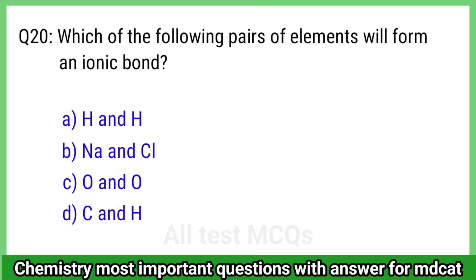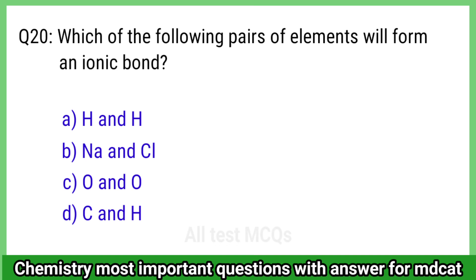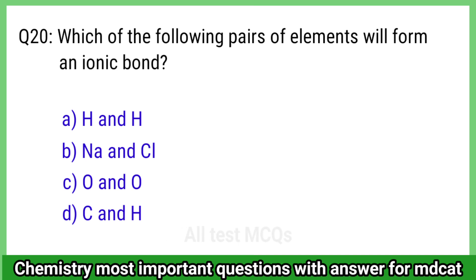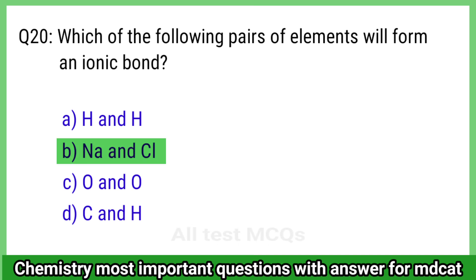Question 20: Which of the following pairs of elements will form an ionic bond? The right answer is option B, Na and Cl.